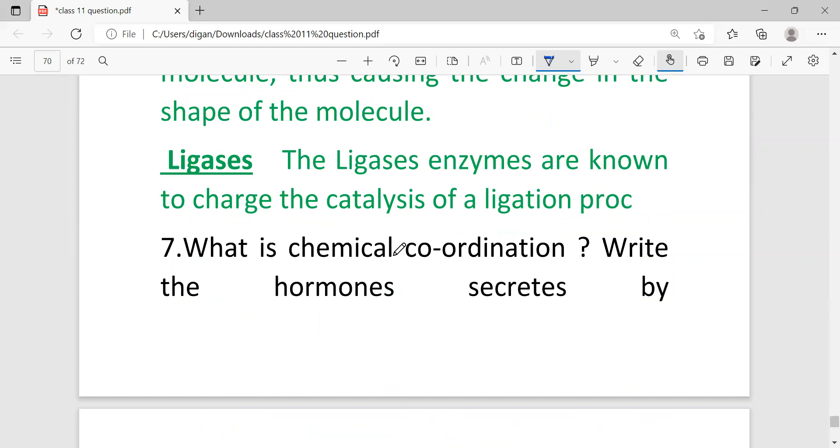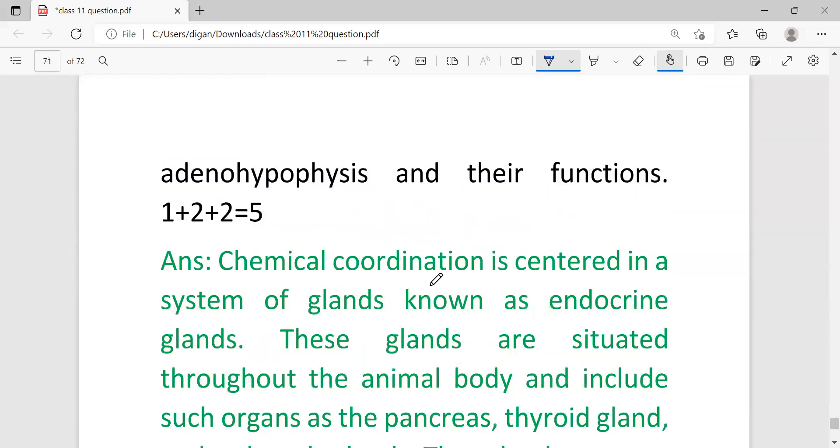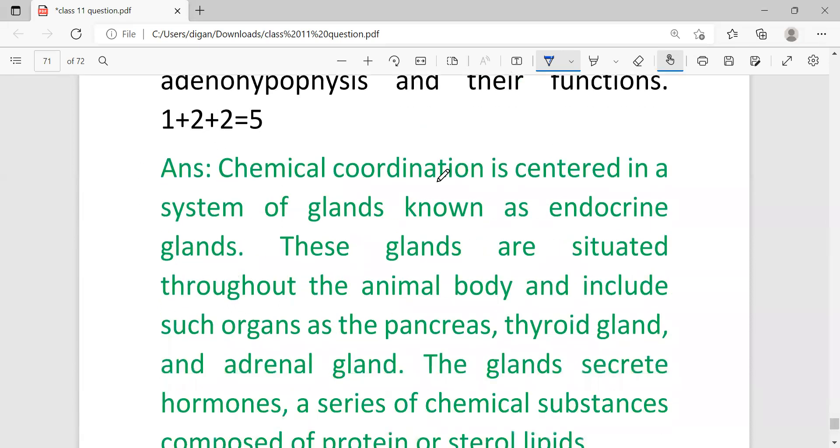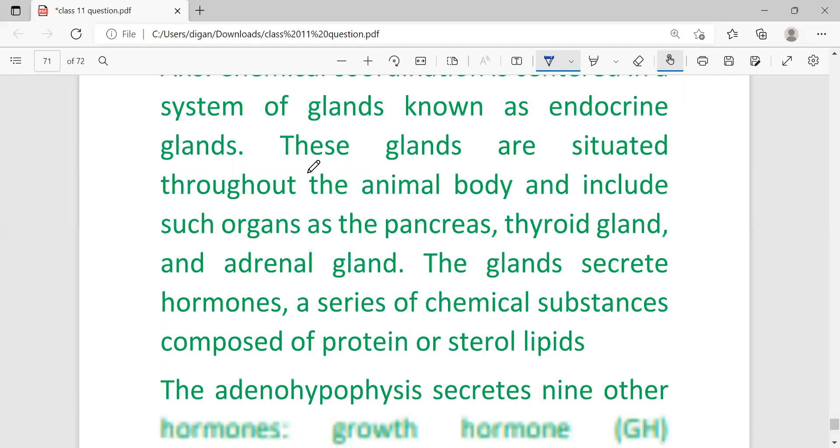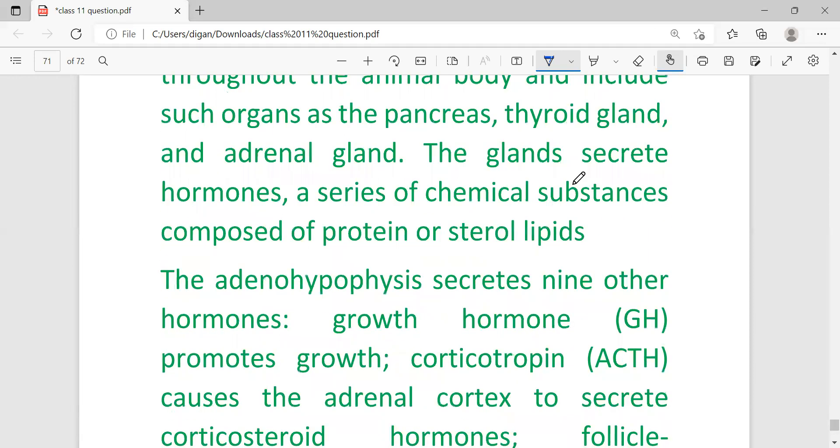What is chemical coordination? Write the hormones secreted by adenohypophysis and their functions. This question carries 1 plus 2 plus 2 equals 5 marks. First you have to write what is coordination, the definition. Then write where these glands are situated. Then you have to write what this gland secretes: hormones, a series of chemical substances composed of protein or steroid lipid.